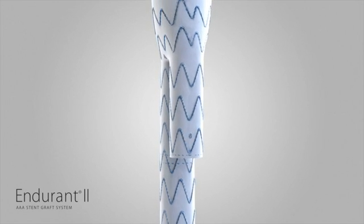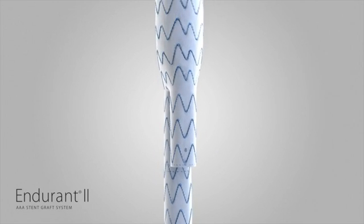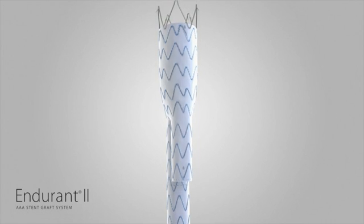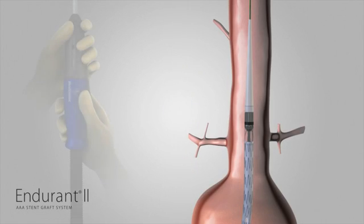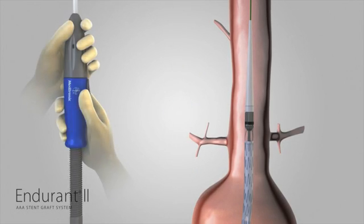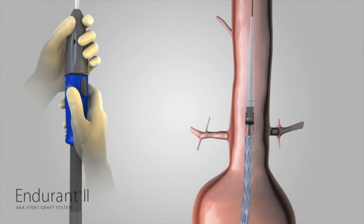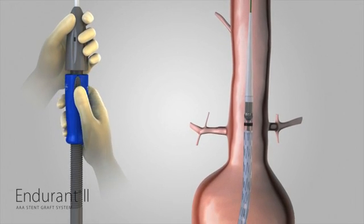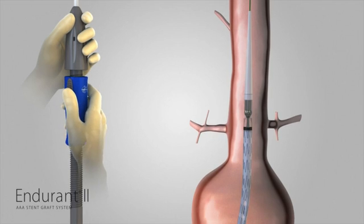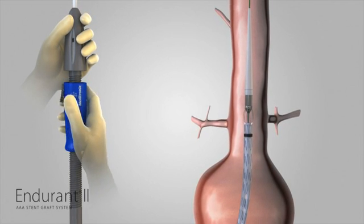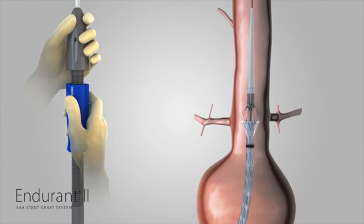Use the marker on the contralateral stub leg to locate the contralateral gate before deployment. With one hand on the front grip, hold the Endurant 2 aortic delivery system stationary. Next, slowly withdraw the graft cover with the other hand by rotating the slider counterclockwise in the direction of the arrows until two to three of the covered stents have been deployed.